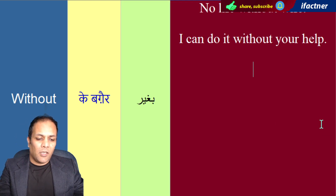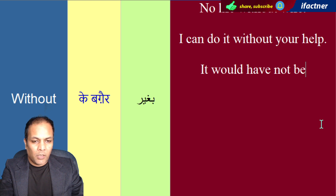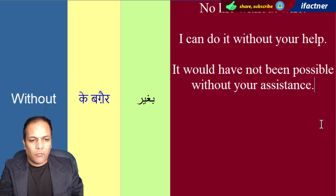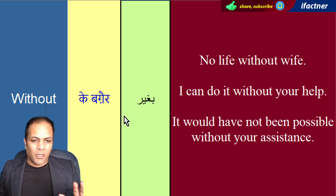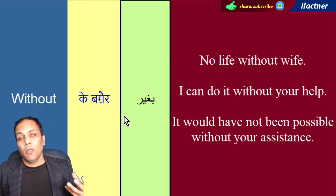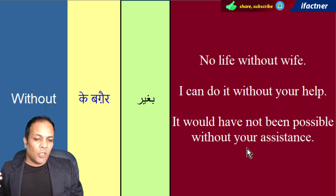Isi tarah, hum keh sakte hain ke: It would have not been possible without your assistance. Yeh tomari assistance ke bagair possible nahi ho sakta tha, kyunki aapne is project pe kaam kiya, isliye hum kamyaab huay. Toh mein kahunga: it would have not been possible without your help, without your input, without your assistance.